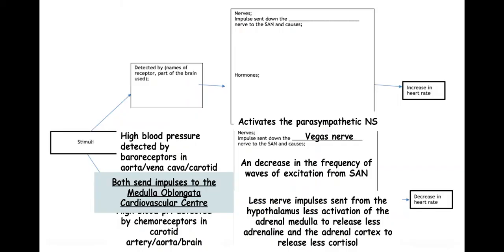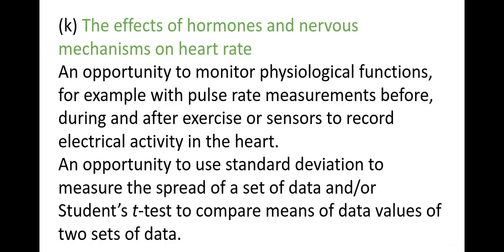The same hormones are involved here, but with less stimulation — so less adrenaline is released and less cortisol is released. Those are the impacts of hormones and nerves on the heart rate. I'll do the t-test in the next video and put links in the description below. Good luck with your exams and all the best.